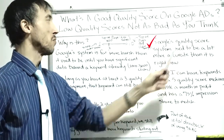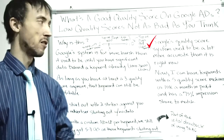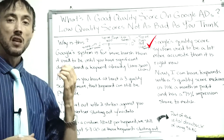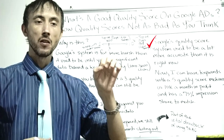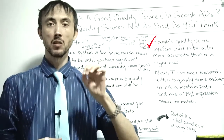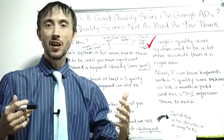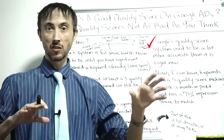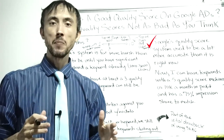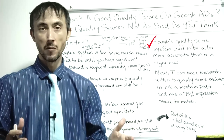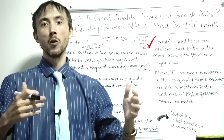Google's quality score system used to be a lot more accurate than it is right now in 2023 and beyond. Your default quality score used to be about a seven when you started your ads — it didn't assume your ads were bad before you even started. I understand why Google's system works this way, because being in the industry, 80% of people who try Google Ads are going to quit within the first year.